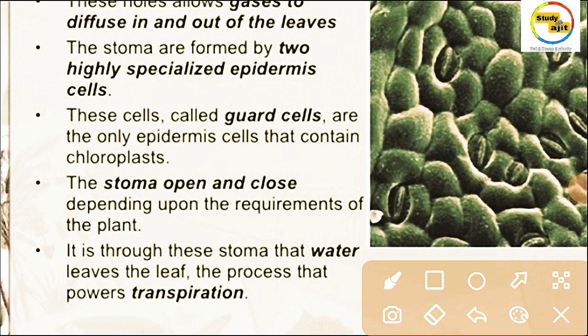Guard cells are the only epidermal cells that contain chloroplasts. The stoma opens and closes depending on the requirement of the plant. It is through this stoma that water leaves the plant — this process is called transpiration.